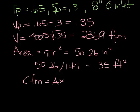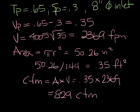So now the CFM is the area times the velocity, which equals 0.35 times 2369 feet per minute. And you get a CFM of 829 CFM.